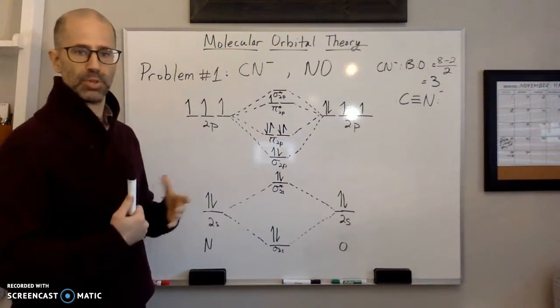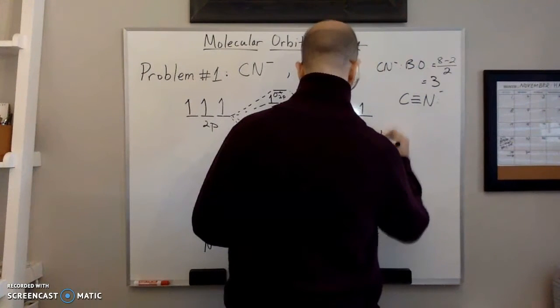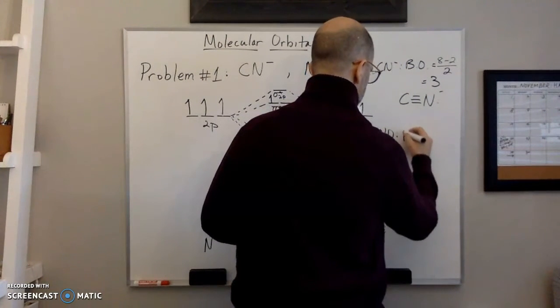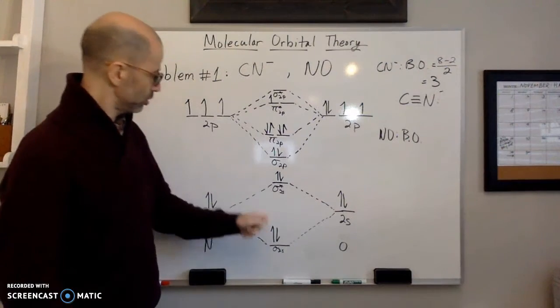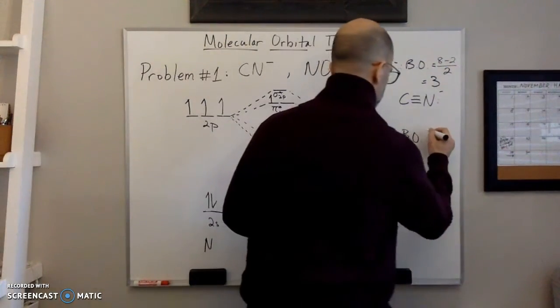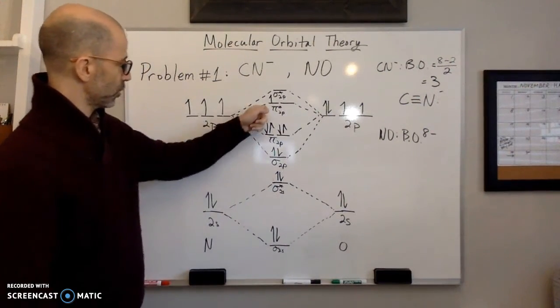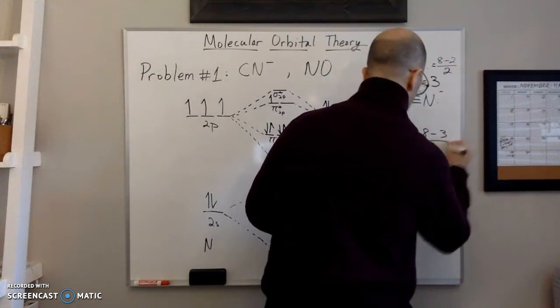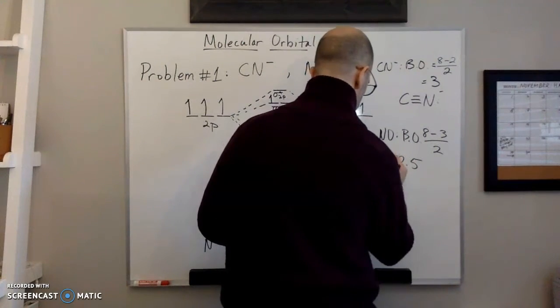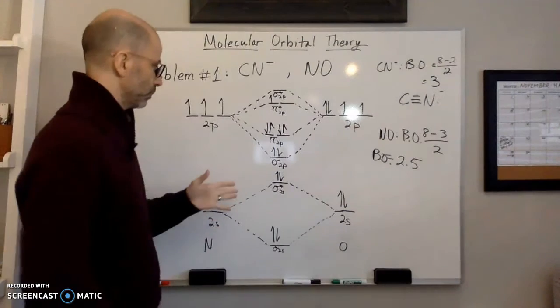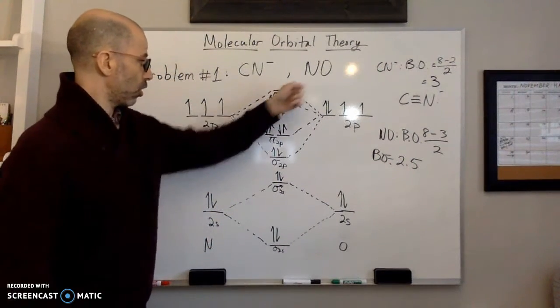So we would expect this to have magnetic properties because it's paramagnetic. And what about the bond order? So the bond order for NO is going to be the same calculation. So number of electrons in bonding orbitals. We have 2, 4, 6, 8 minus the number in the antibonding orbitals, 1, 2, 3. So minus 3 divided by 2. And that's going to give us 2.5 for bonding order. So bond order is going to be 2.5. So we have 2.5 bonds for NO. And it's a free radical.